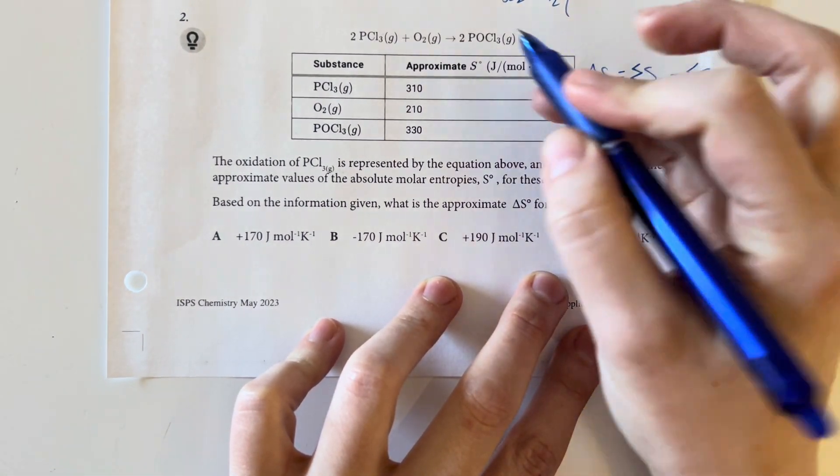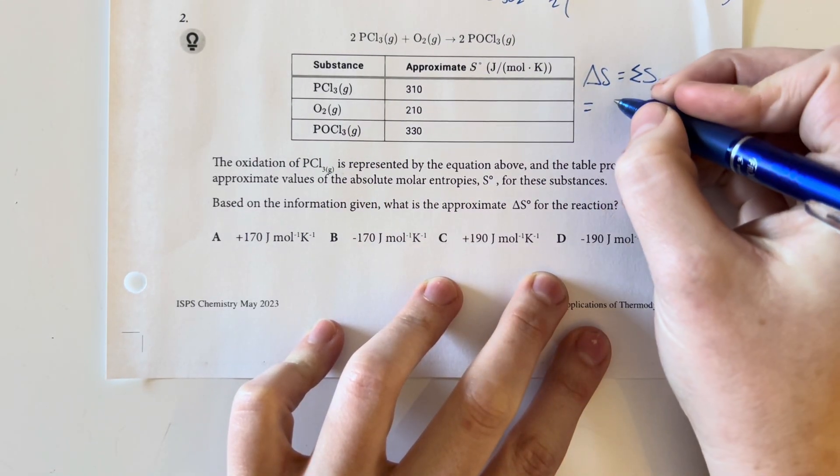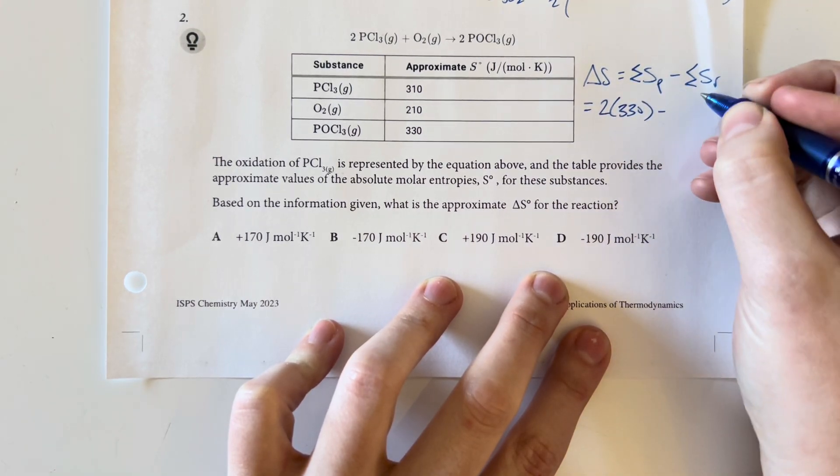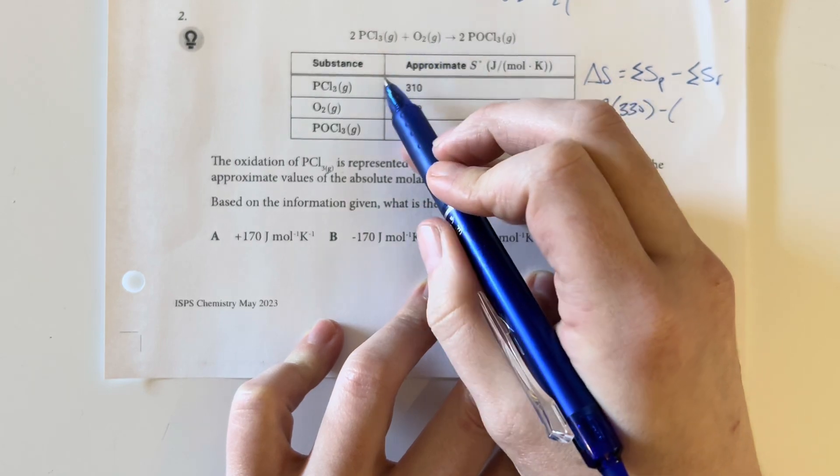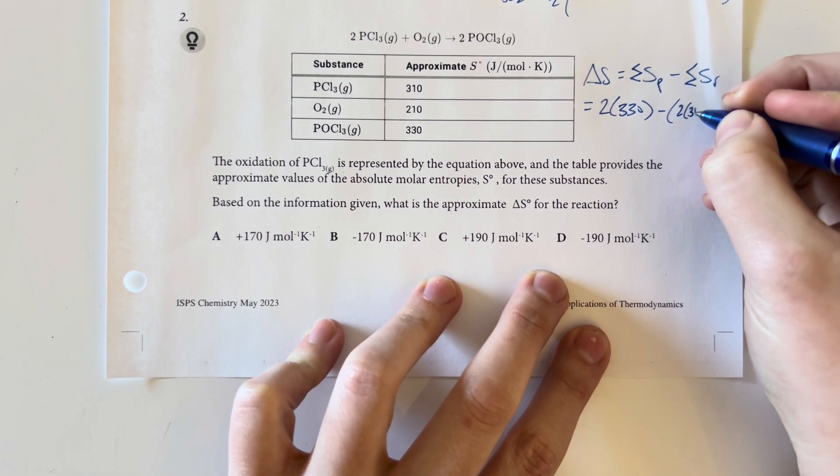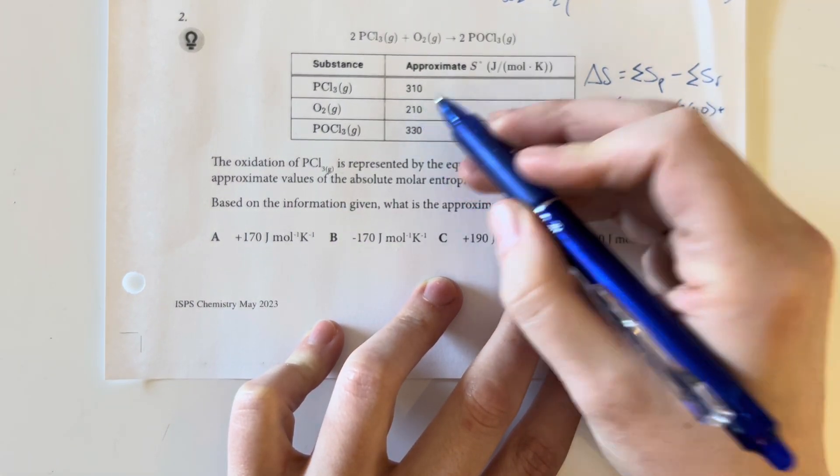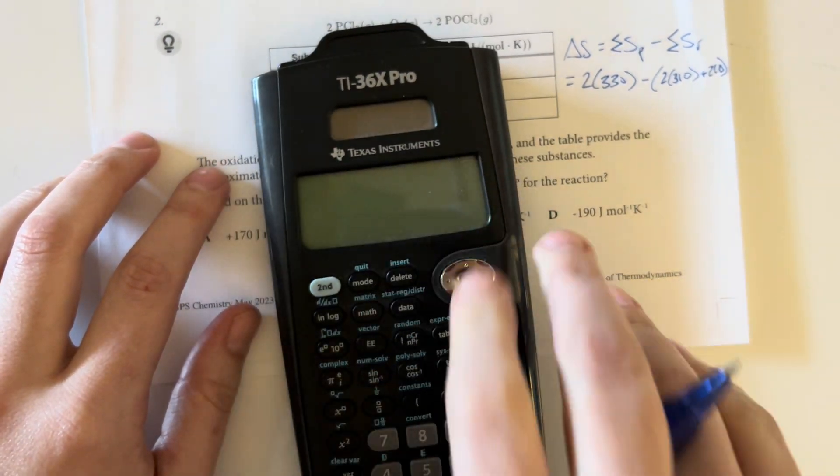My products here is going to be the large complex, and I have a coefficient of 2, so 2 times 330 minus the sum of these. So we have 2 times 310 plus 210. We'll go ahead and plug that into the calculator.